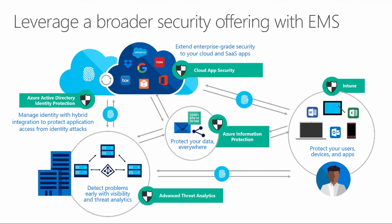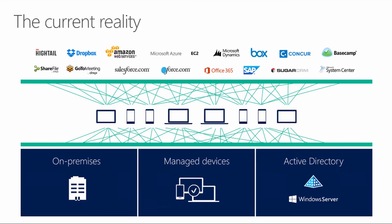Microsoft has really designed an ecosystem with the Enterprise Mobility and Security Suite. Looking at this diagram, we have Azure Active Directory Identity Protection, Cloud App Security, Intune, Azure Information Protection, and Advanced Threat Analytics. You can see the flow of data and identity and the different products it entails to look at the security and compliance aspects as a whole — to protect data, to protect devices, and to protect your user identities.